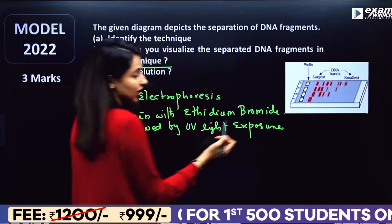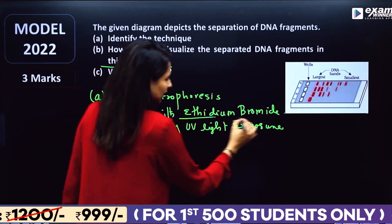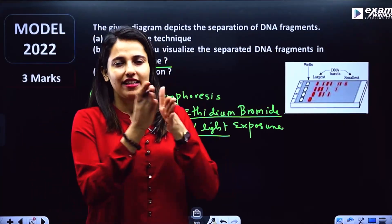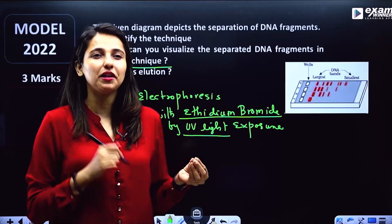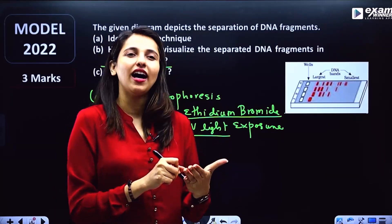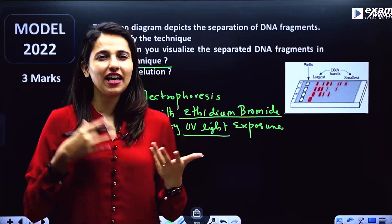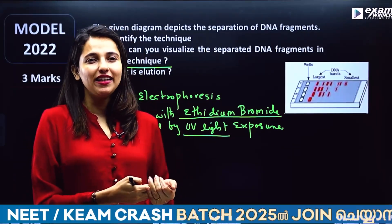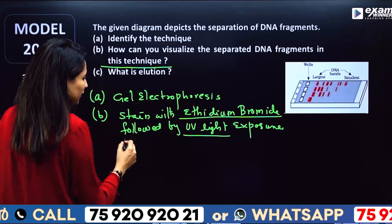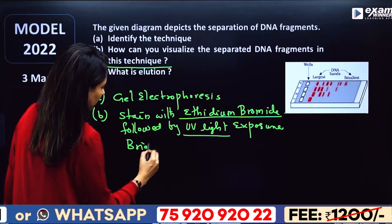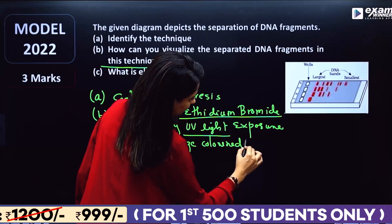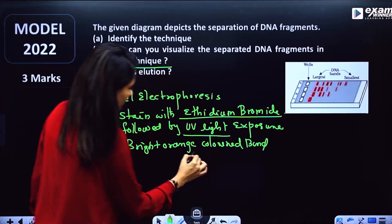We can see bright orange colored bands. We can underline the important items because we are going to examine the exam. Teachers are going to test this. You can underline the pattern. That's the first important point — bright orange colored bands.